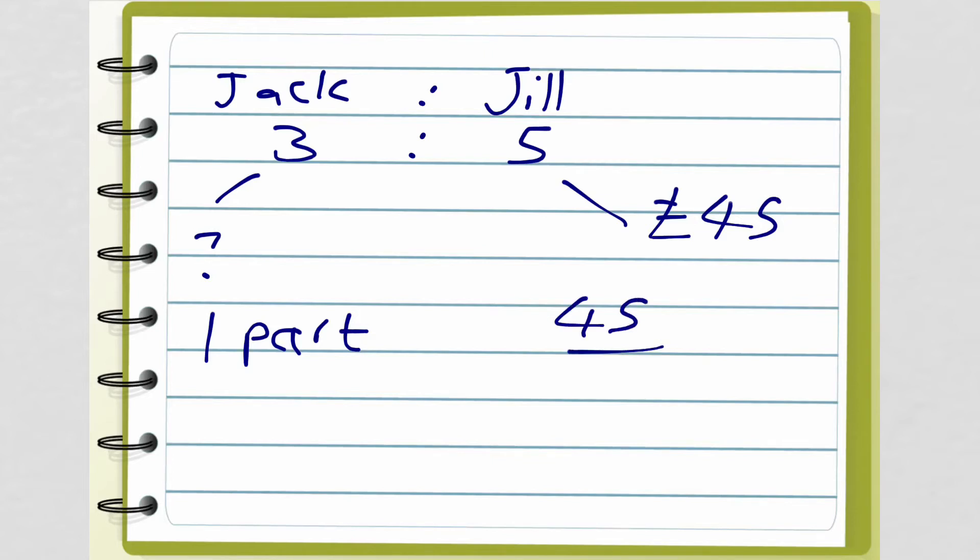Okay, so Jack to Jill was 3 to 5. You're told that Jill had £45. So we want to know how much Jack had. So what we do is we find out what one part is worth. If five parts is worth £45, then one part is going to be worth 45 divided by 5, which equals £9. So in that case, Jack, who has three parts, is going to be 3 times 9, which equals £27.